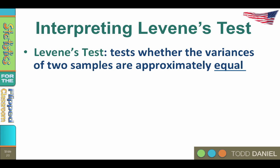Levine's test tests our assumption of homogeneity of variance. Like any hypothesis test, Levine's test starts with a null hypothesis. In this case, the null hypothesis is that there is no difference between the variance of the first group and the variance of the second group. Unlike a t-test, in which we are testing whether the mean of the experimental group is different than the mean of the control group after a treatment, with Levine's test we want the variances to be the same.